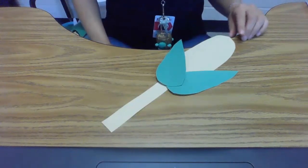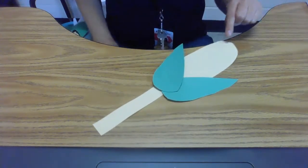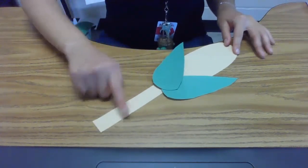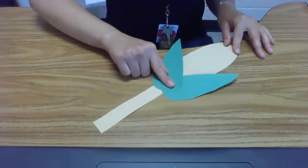So your stalk of corn should look just like this. We have the corn ear, the corn stalk, and the corn leaves or husks.